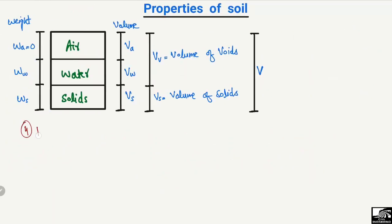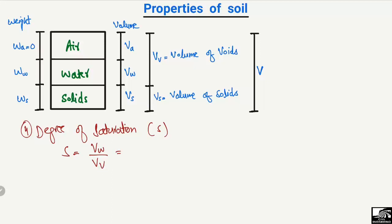The fourth property is the degree of saturation, which is one of the important properties of the soil. The degree of saturation is equal to the volume of water divided by the volume of the voids. So it is Vw divided by the combination of volume of air and volume of water (Va plus Vw). We multiply it by 100 to get the degree of saturation in percentage, and it is mostly expressed in percentage.